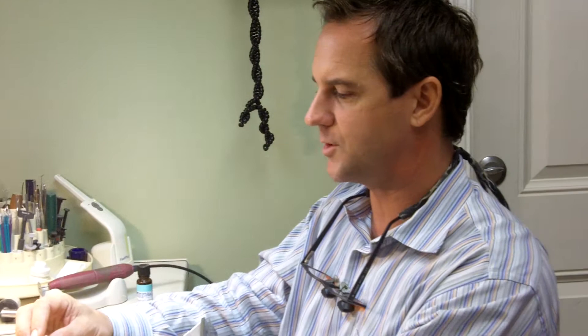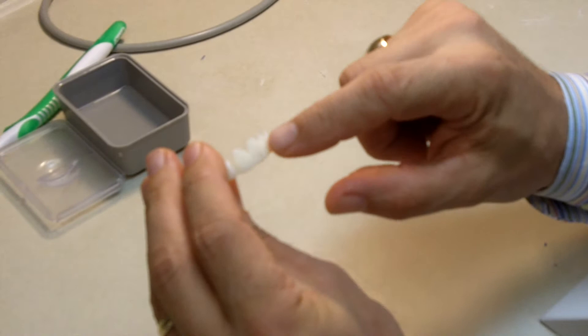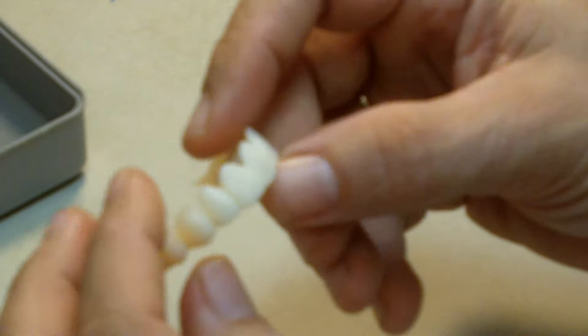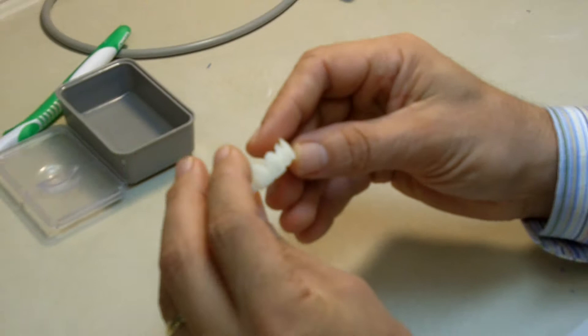I have a full arch provisional here that I just pulled from the Siltec, and I don't like this little bleed-through spot on the central right here, and I got another little bleed-through spot. So I'm going to need to reline it, and I'm going to show you a couple of tips on adding composite to a BIS-GMA provisional.